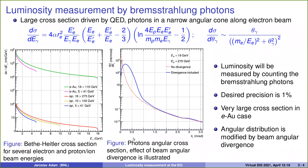The luminosity will be based on bremsstrahlung photons, which have a very large cross-section driven mainly by QED, where the photons are emitted in a relatively narrow cone along the electron beam direction. The measurement will be based on counting bremsstrahlung photons with precision of at most 1%. Cross-sections are very large, shown here as a function of photon energy, especially for the case of electron-gold collisions.